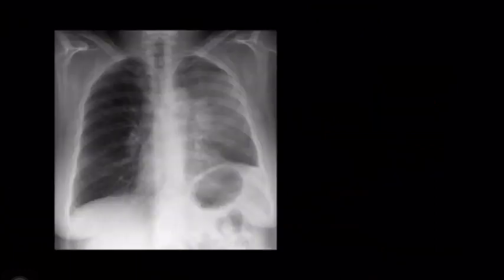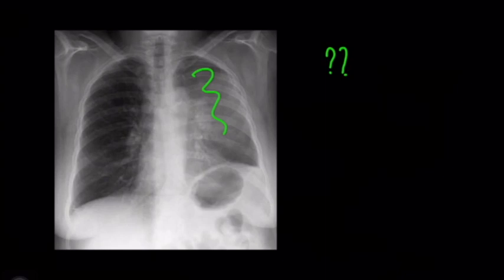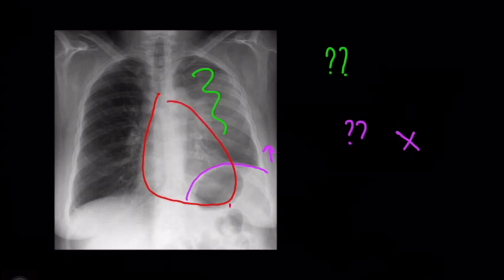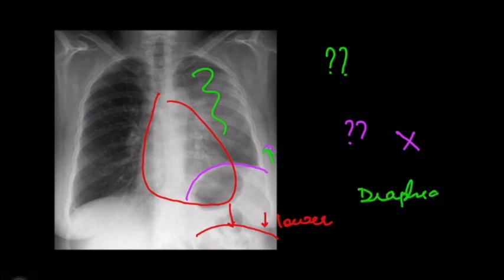In the next figure, there is an opacity and the left hemidiaphragm is at a higher level, which is not normal. We know the heart pushes the diaphragm down and the left hemidiaphragm is expected at a lower position than the right. This is pathological — displacement of the diaphragm, specifically elevation of the diaphragm, is another indirect sign of collapse.